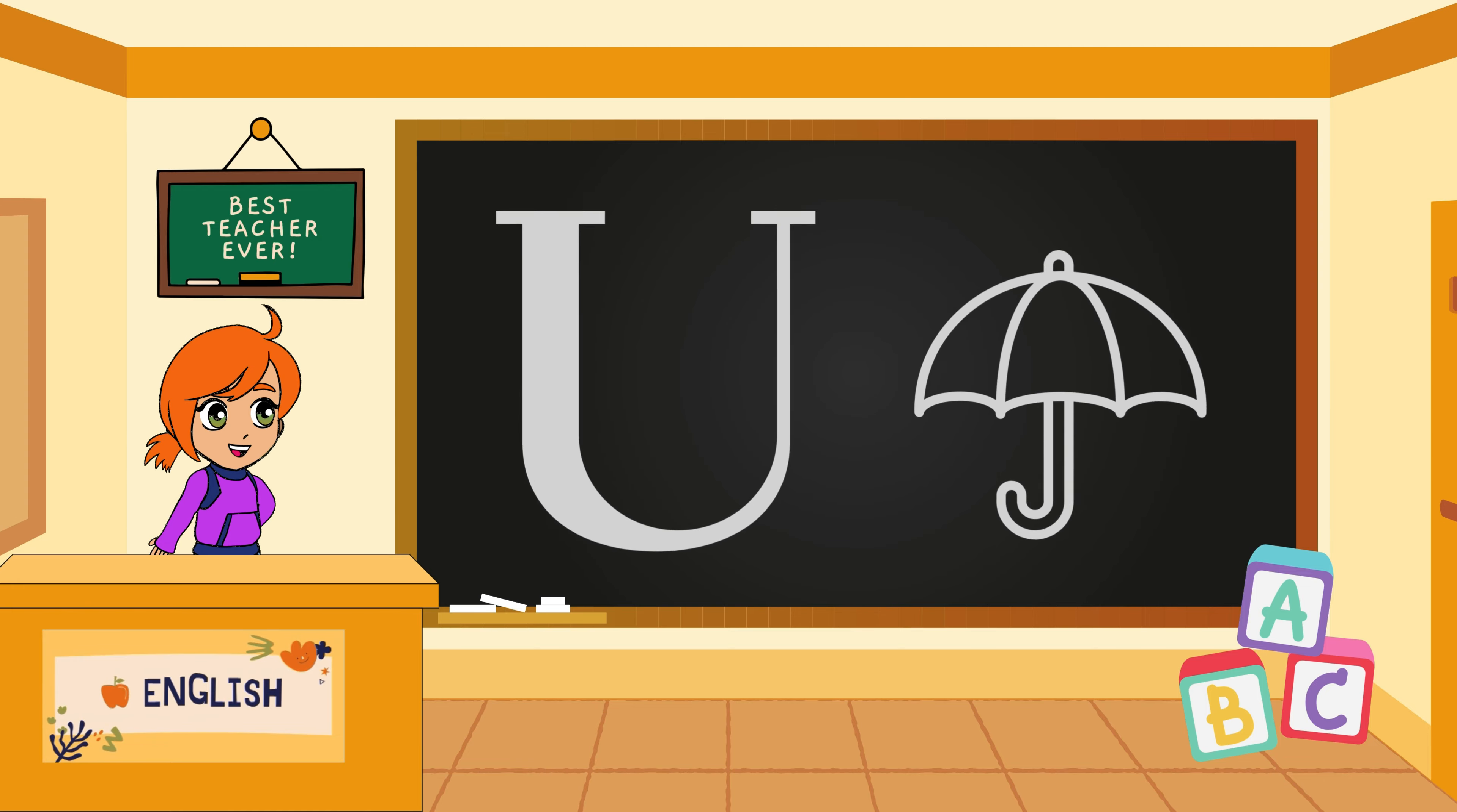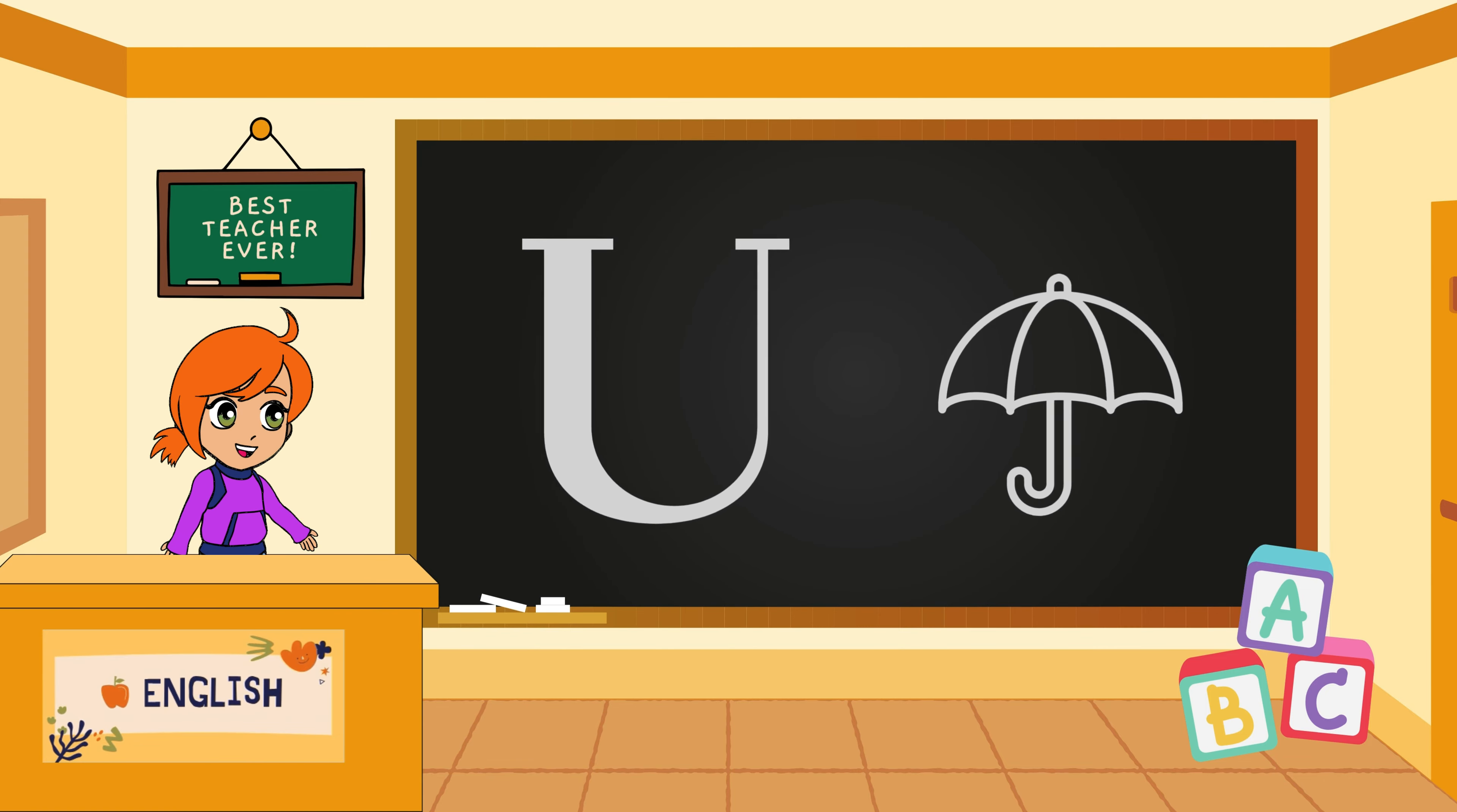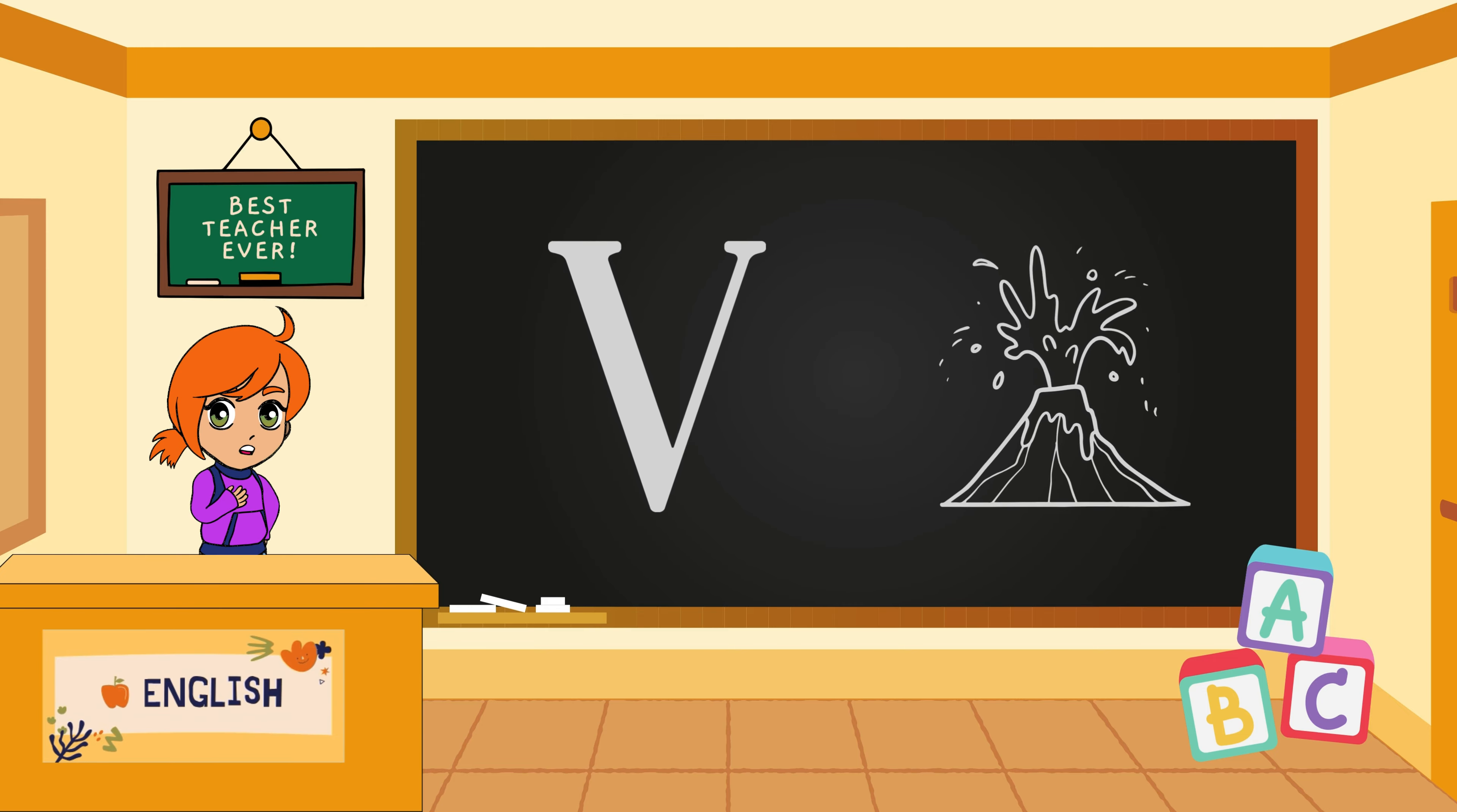U goes upward like an umbrella. Visualize an umbrella opening up. U makes the sound uh. V is a vibrant volcano. Picture a volcano erupting with colors. V makes the sound vuh.